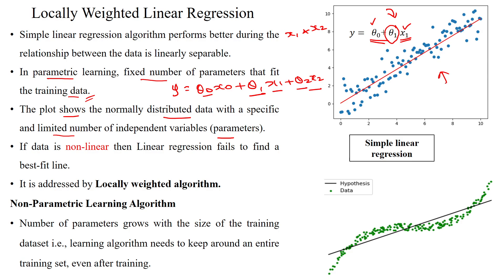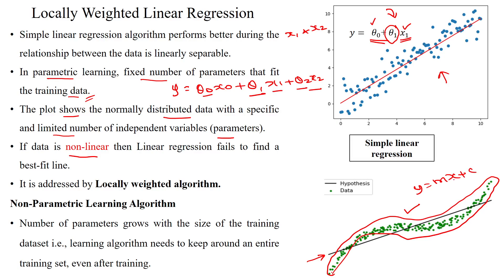The model learns patterns from fixed parameters to predict test data points. But if the data is non-linear, the straight line equation y = mx + c cannot serve as a decision boundary for non-linear data. For that, we apply the locally weighted regression algorithm to find the best-fit decision boundary.